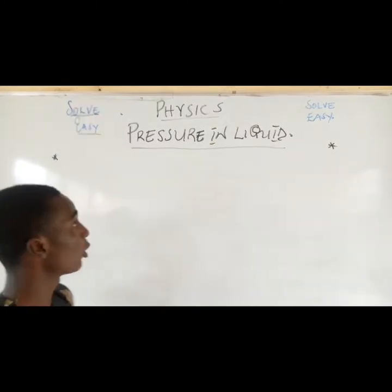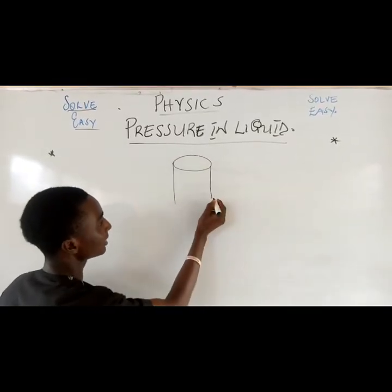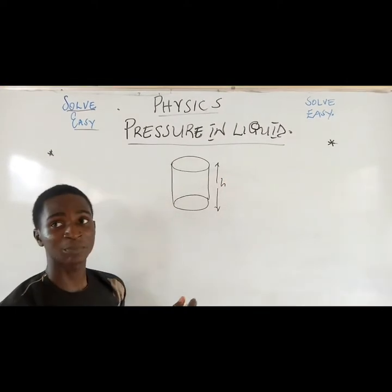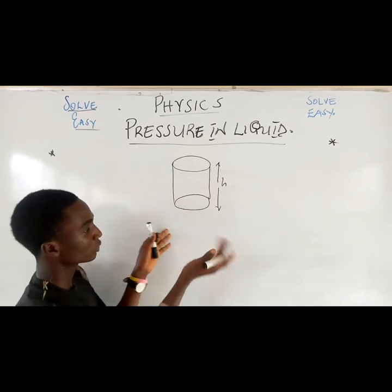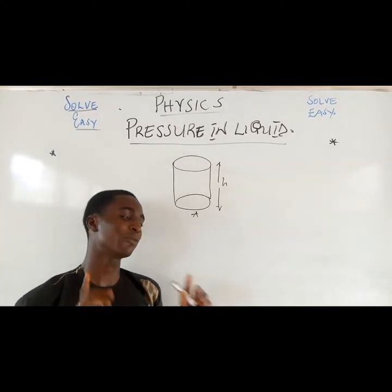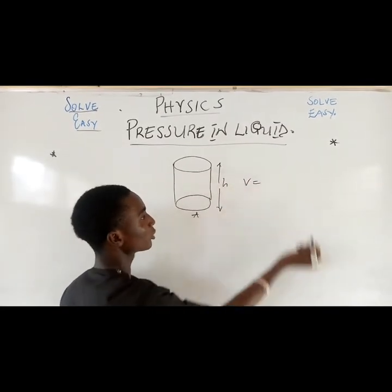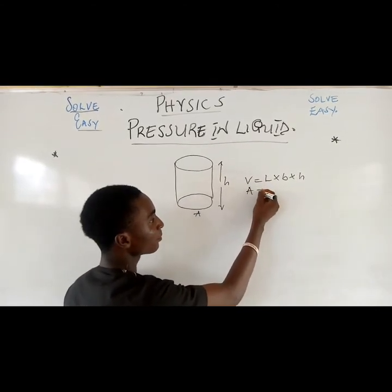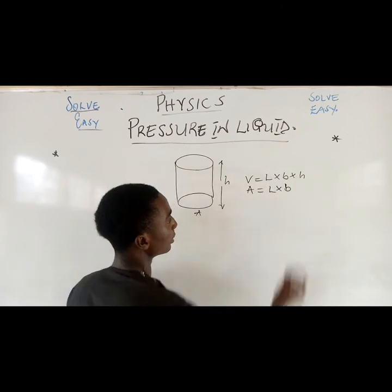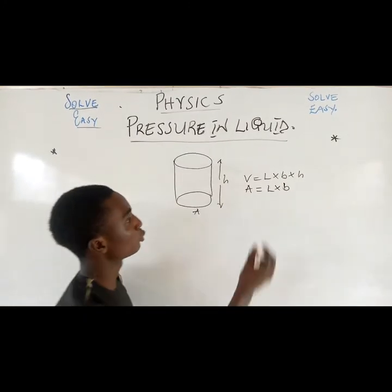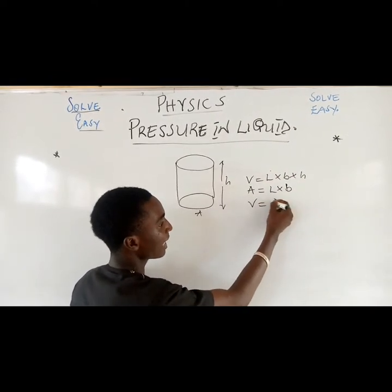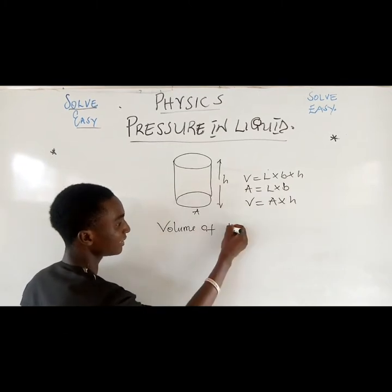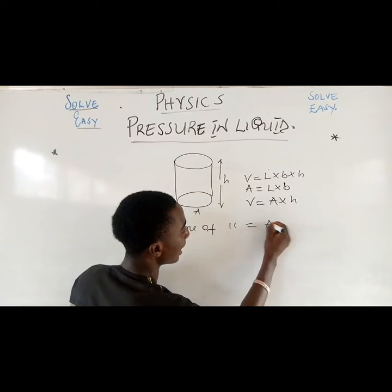To find pressure in a liquid, let's assume we have a perfect cylinder. This is the height of the cylinder — imagine it is a bucket that is flat at the bottom, so we call the bottom the area of the cylinder. Note that volume is equal to length times base times height, and area is equal to length times breadth. So we can write volume as area times height.